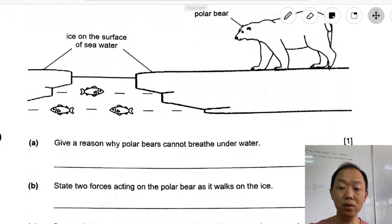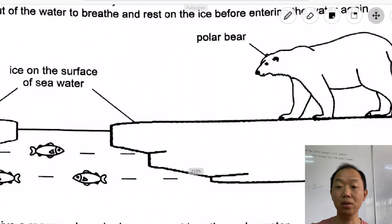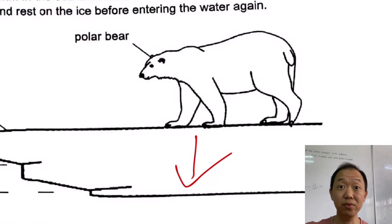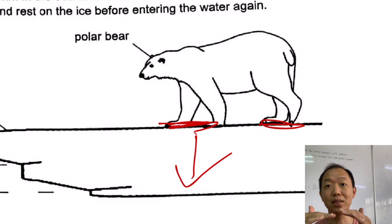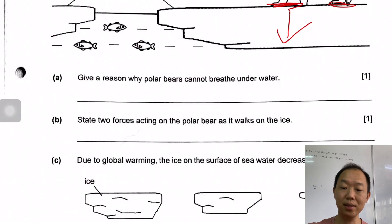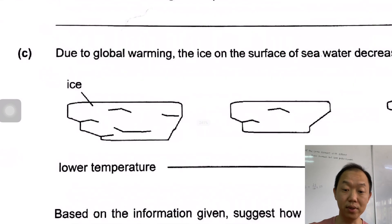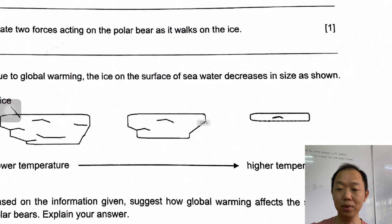What are the two forces acting on the polar bear as it walks on the ice? There are two of them: one is the gravitational force that's going downwards, and then there is friction. Because it's walking on ice, as long as there's movement, there's going to be friction. Due to global warming, the ice on the surface decreases in size as shown. If it's cold, the ice is big. If it's warm, the ice is small, as you can see over here.